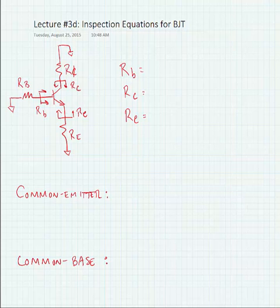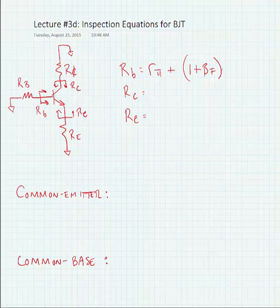The first thing we need to know is what the intrinsic resistance is looking into any of the terminals of the transistor. We're going to start with the intrinsic resistance looking into the base, r_b, which is equal to r_pi plus (1 + beta_forward) of the transistor times any extrinsic resistance connected to the emitter.